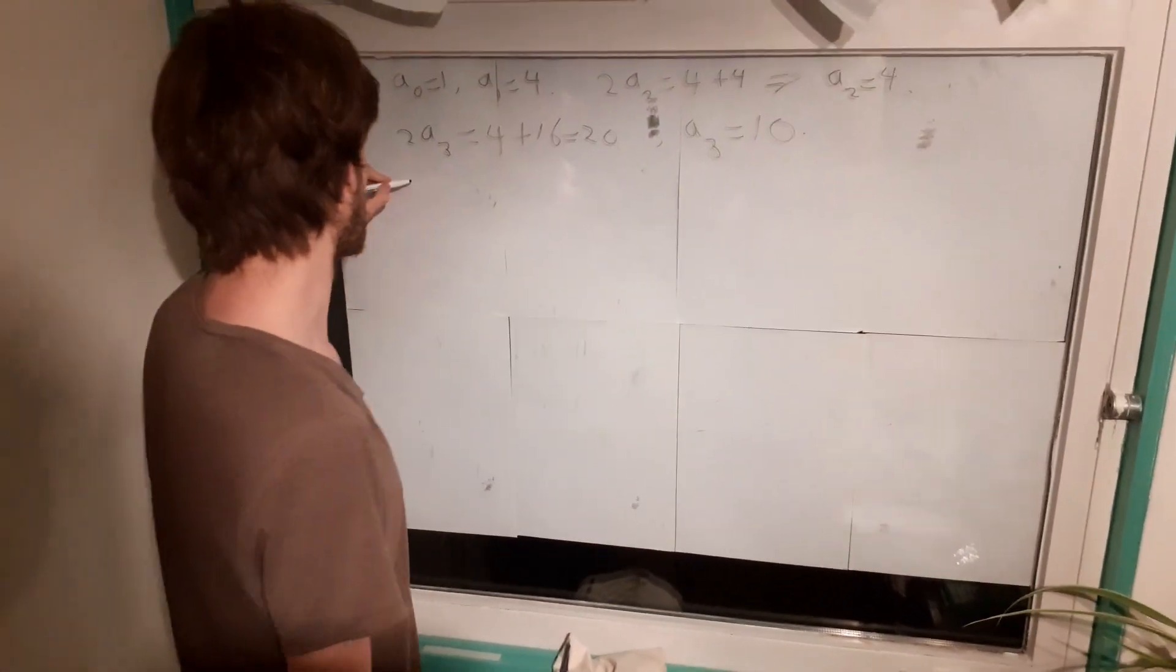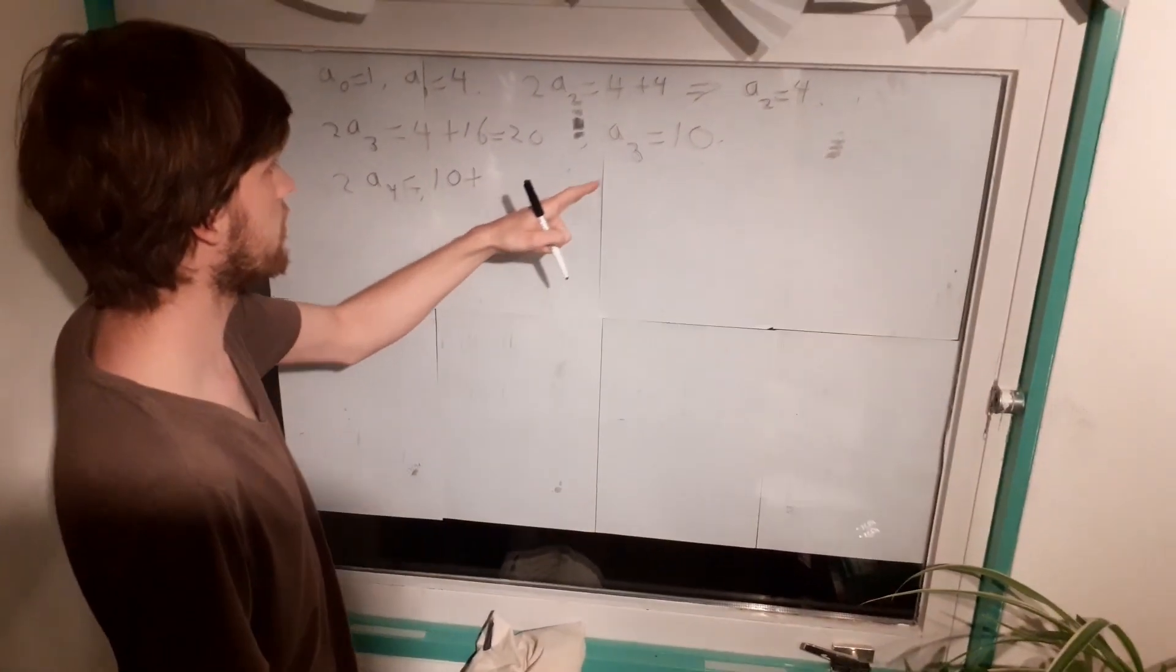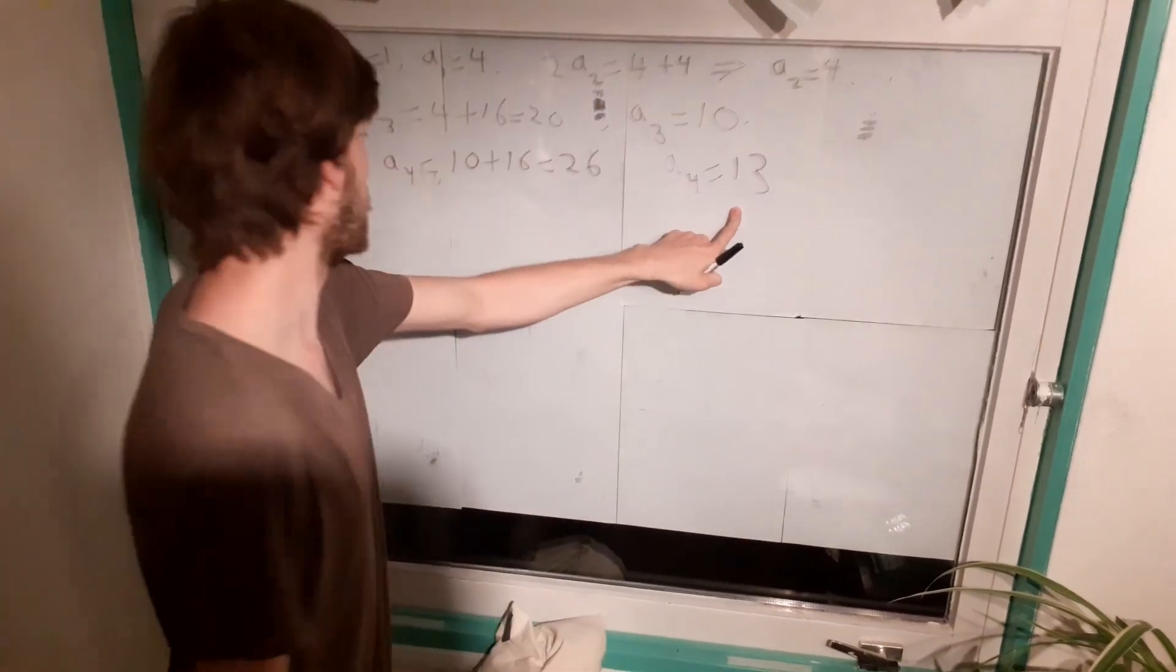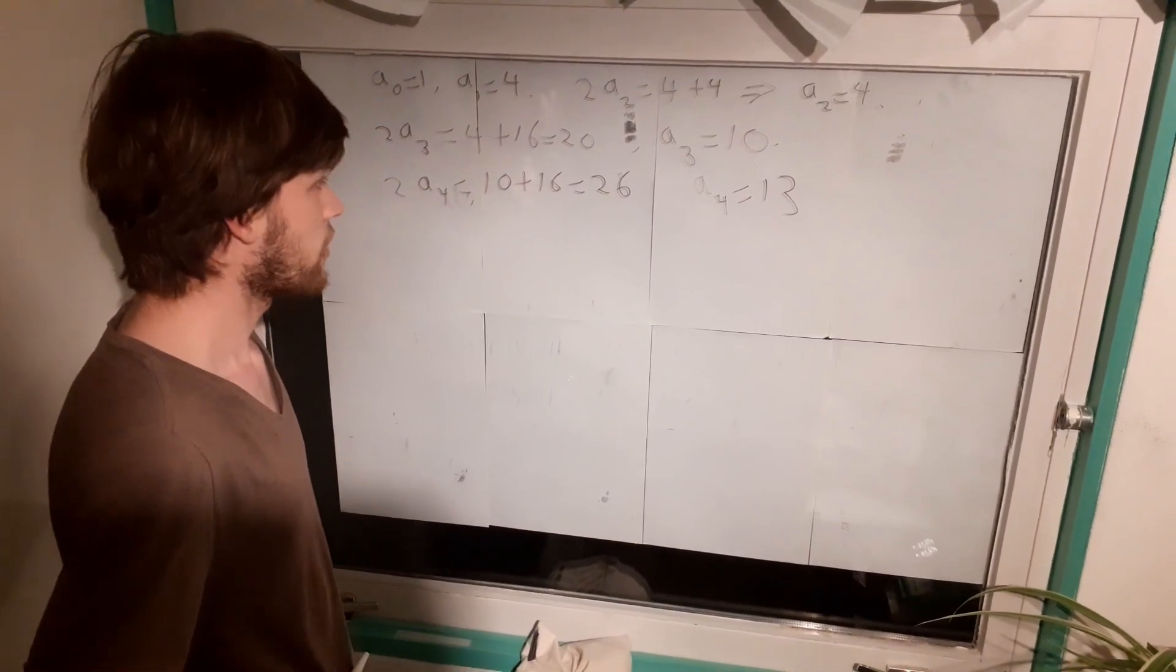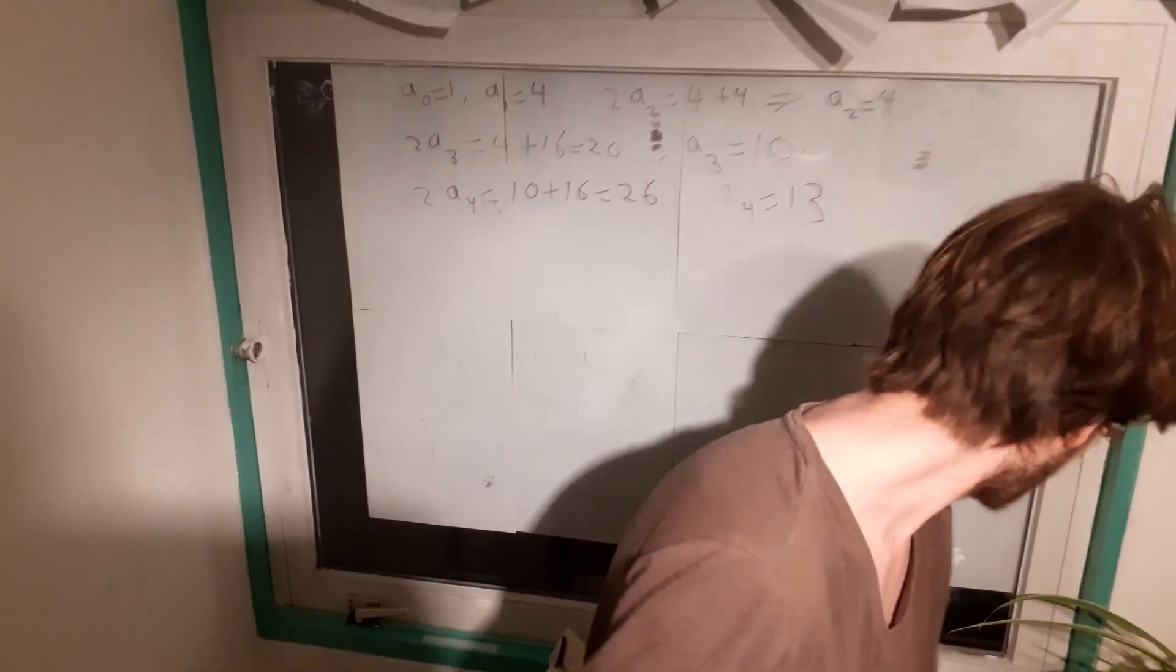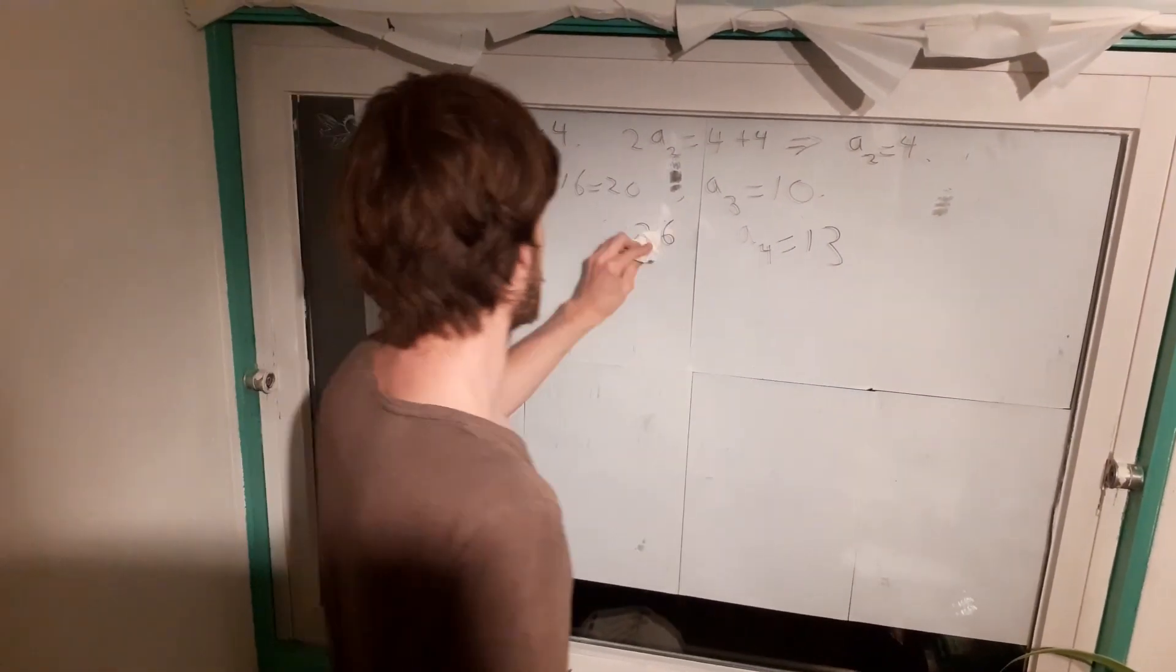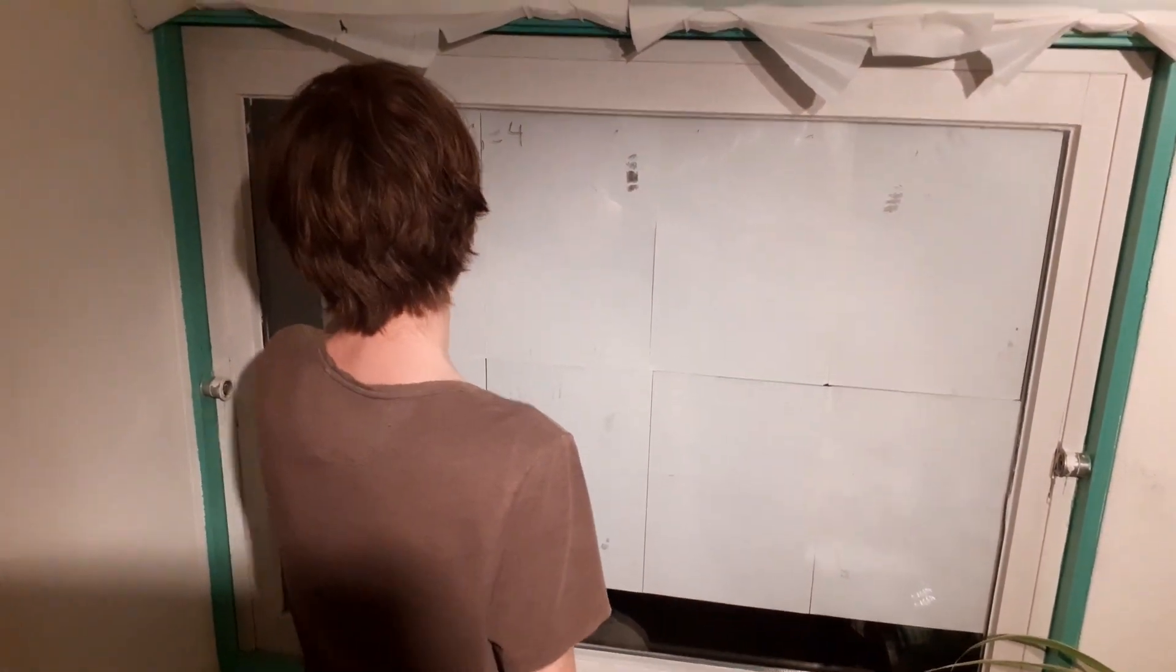Alright. Then we can go on to the next one. 2a_4 equals 10 plus 16 equals 26. And a4 equals 13. Ah, but now we have an odd number. And now we already know that it's going to go wrong in the next step. So apparently this way of making sequences does not really work. But we have already found some interesting things from it. Namely that many numbers are divisible by 2 and a1 is actually divisible by 4. So this last thing is maybe something that we can generalize.